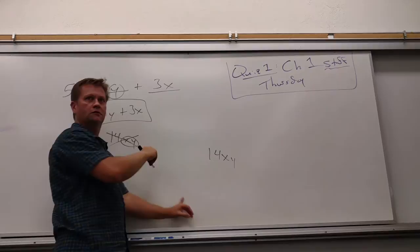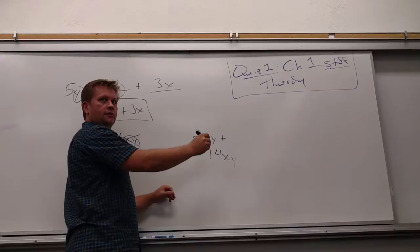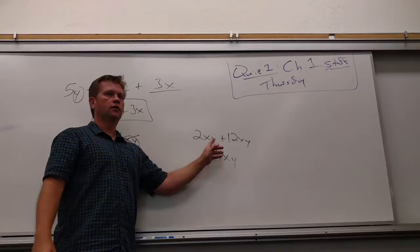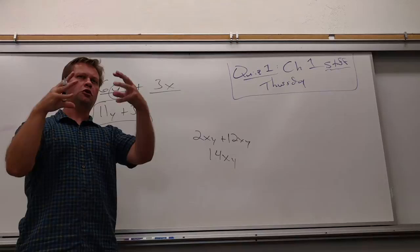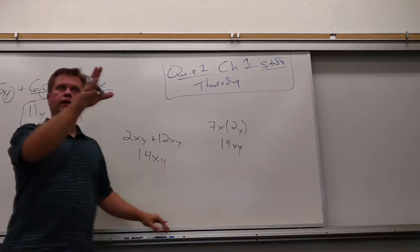Can somebody give me a problem where the answer would be 14xy? For example: 2xy plus 12xy — that would give 14xy, because I see a total of 14 xy's. Now, multiplication is not as restrictive as addition. I could say 7x times 2y — what's that? 14xy. Do you see how multiplication is not as restrictive? You can multiply different terms together, but you can only add like terms.